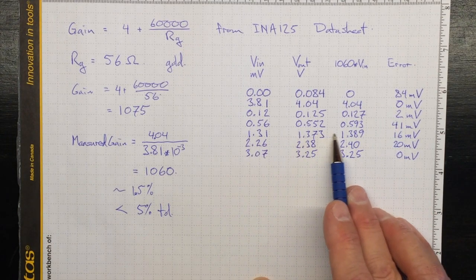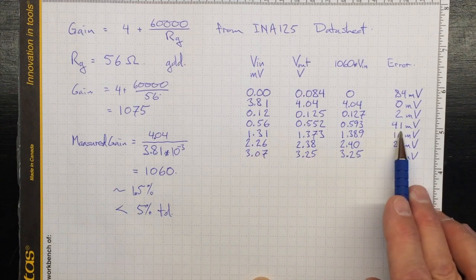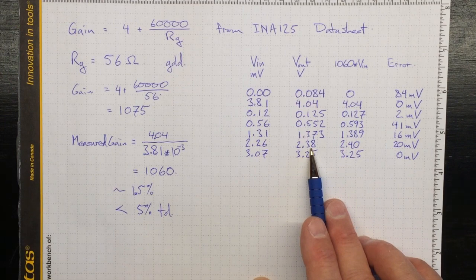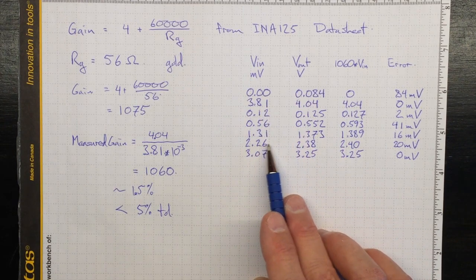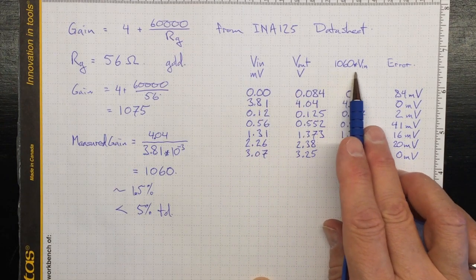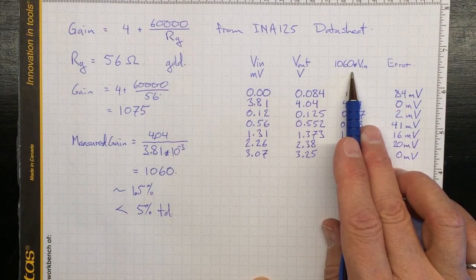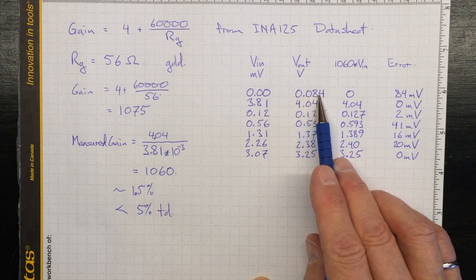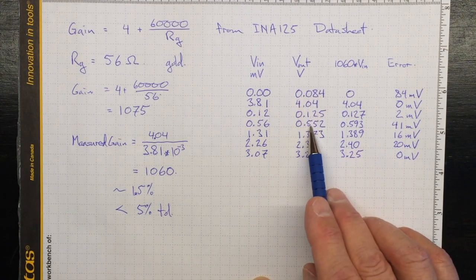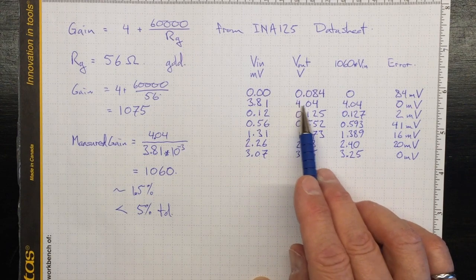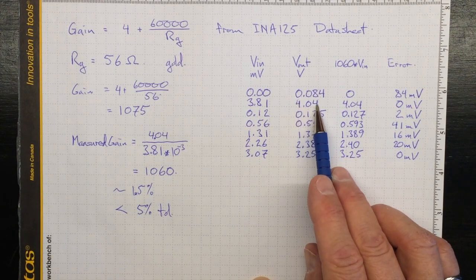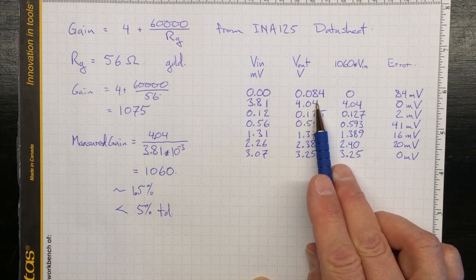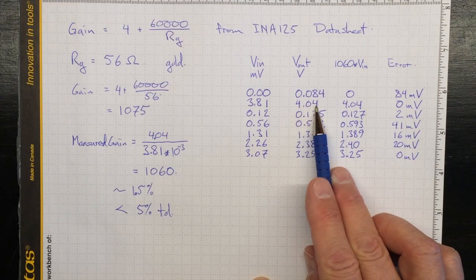1.3, we're within 16 millivolts, and so on all the way up. So we're within the accuracy of measurement on our output voltage and our input voltage. I've got a fairly high degree of confidence in this gain of 1,060. Now you'll notice that the measurements of Vout go from three decimal places on the small voltages down to just two decimal places on the larger voltages. That's because I had to switch up a range on the multimeter, which only shows two digits on the 0 to 20 volt scale.